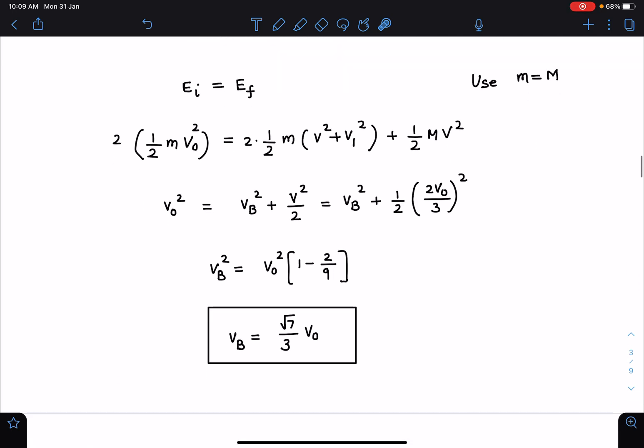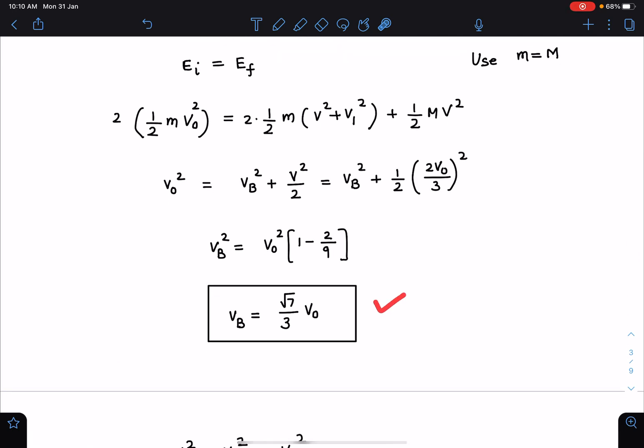So speed is root of v1 square plus v square, double of that, and energy of the frame half m v square. Now I am using small m is equal to capital M. When I substitute these values, I am getting velocity of bead, the net velocity of bead, this value I am calling as vb, as root 7 by 3 v0. So this is one of the answers for the first part.